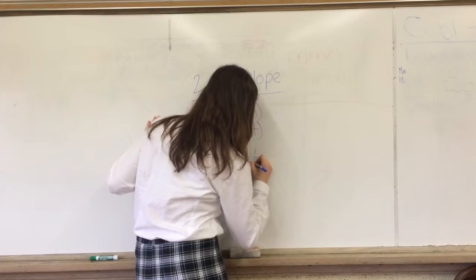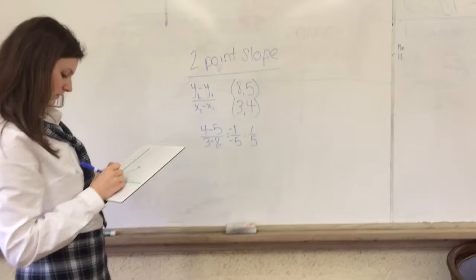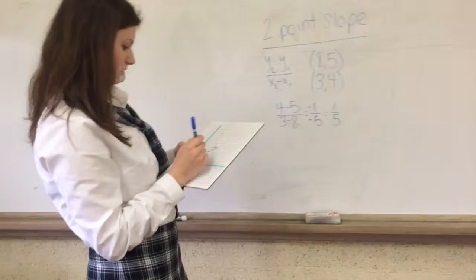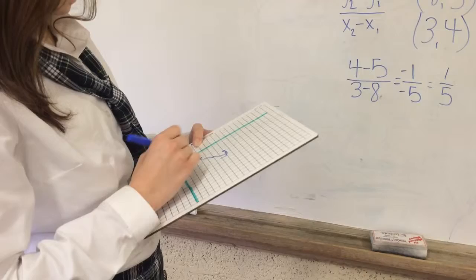So we're going to use the same equation for this one, and then we can graph it. We can graph those two points and then use those to find other points. So those lines are very close together, but they are two different slopes.